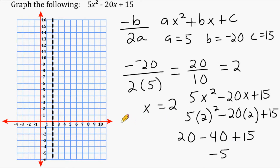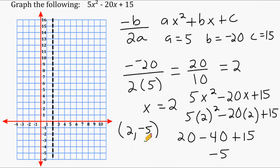When x equals 2, the corresponding y-value is negative 5, which is the vertex of our parabola. Let's plot this point: go over to positive 2, then go down 5 units, and place our vertex at (2, -5).